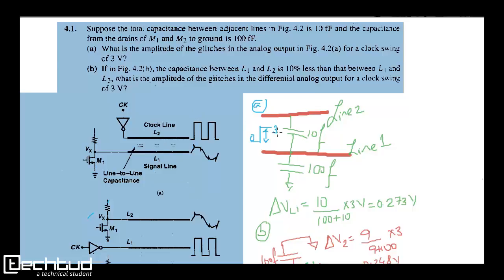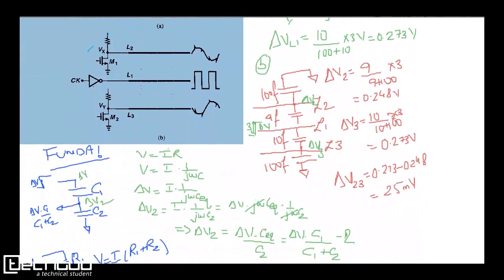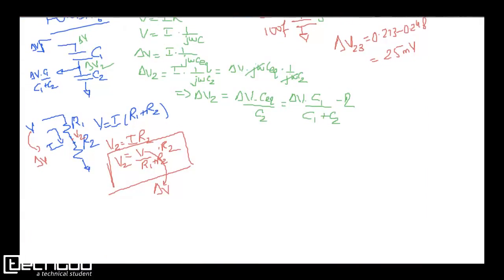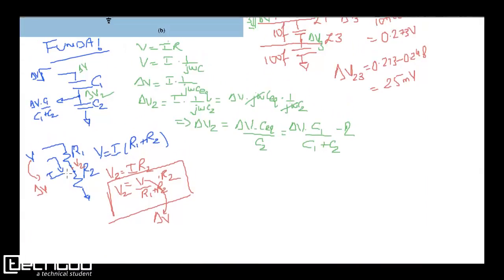So the fundamentals here: suppose you have resistors R1 and R2, and you have an amount of current flowing through them. And now this is delta V we are showing, the amount of jump that you are getting. So what is the amount of effect you will get in V2? Simple: R2 by R1 plus R2 into delta V. That is the amount of glitches you will see across R2. So how we have got it is V equals I into R1 plus R2, and V2 is current times R2, which will be the same.